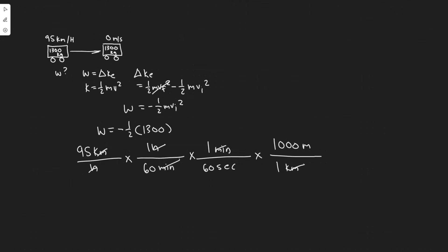All you got to do is perform the calculations. So 95 divided by 60, divided by 60 times 1,000. So 26.389 meters per second.